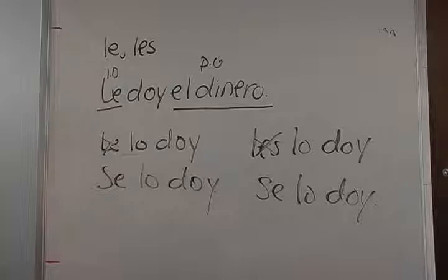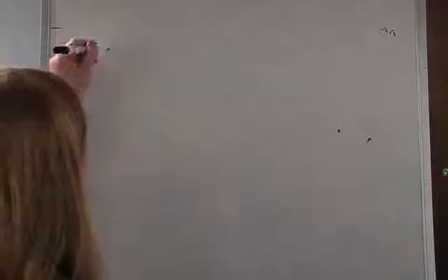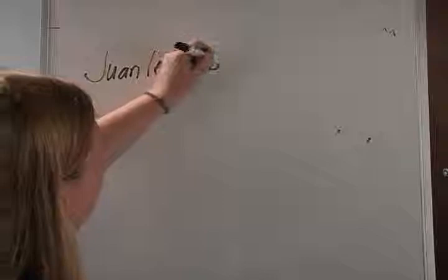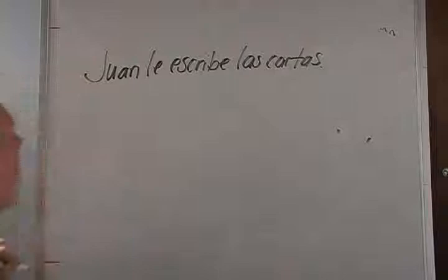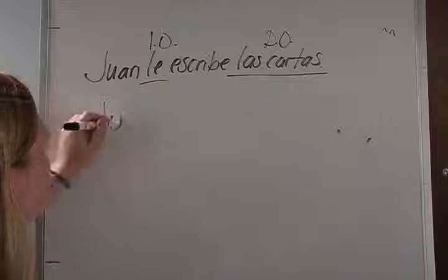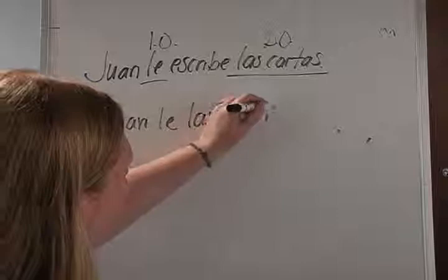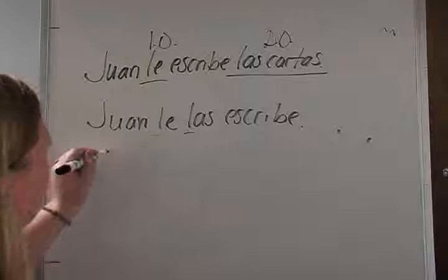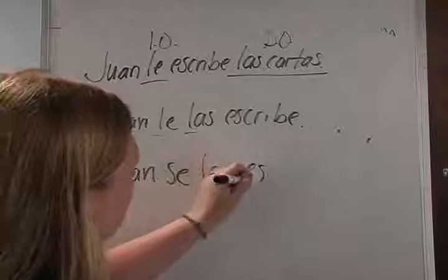Let's look at some sentences. Juan le escribe las cartas. What does Juan write? Las cartas is our direct. Who does he write them to? Le is our indirect. The way we originally rewrite this sentence would be Juan le las escribe. Since we have two L's, we need to change this le to se. So we would have Juan se las escribe.